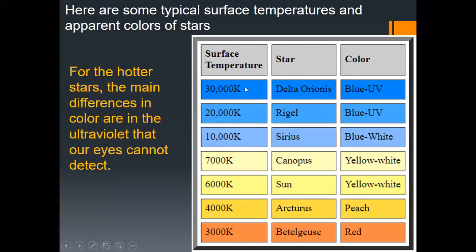Here are some typical surface temperatures and apparent colors of stars: Delta Orionis is 30,000 K and appears bluish-ultraviolet; Rigel is 20,000 K and appears blue-ultraviolet; Sirius is 10,000 K and is bluish-white; Canopus is 7,000 K and is yellow-white; the Sun is about 6,000 K and is yellowish-white; Arcturus is 4,000 K and appears peach; Betelgeuse is 3,000 K and is red. For the hottest stars, the main differences in color are in the ultraviolet, which our eyes cannot detect.